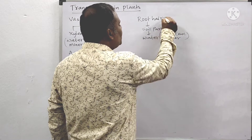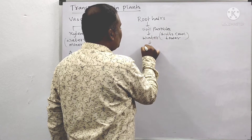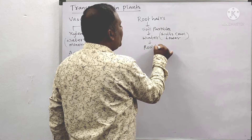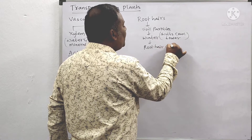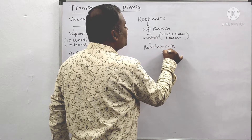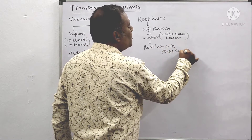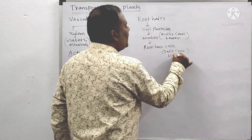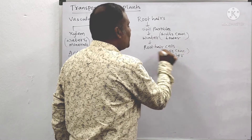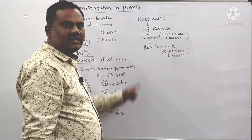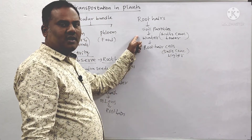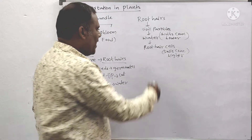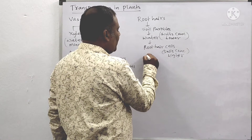Whereas in the root hair cells, the salt concentration will be higher. So the salt concentration is higher in the root hair cells, whereas the salt concentration is lower in the soil particles.